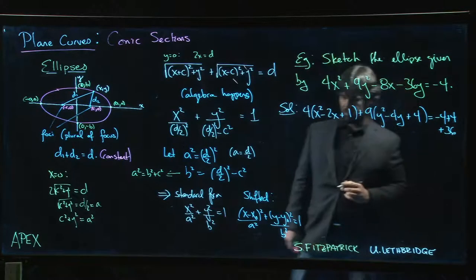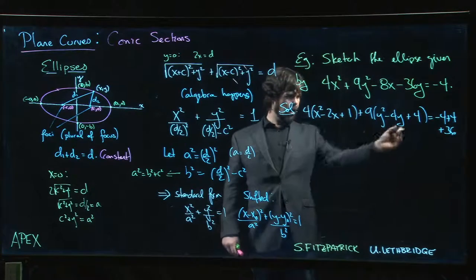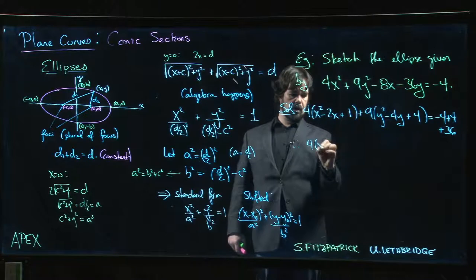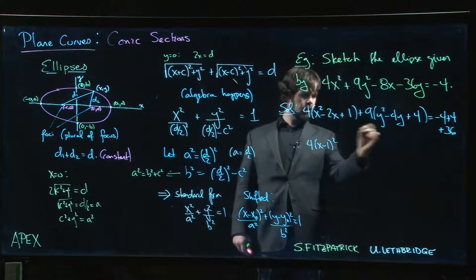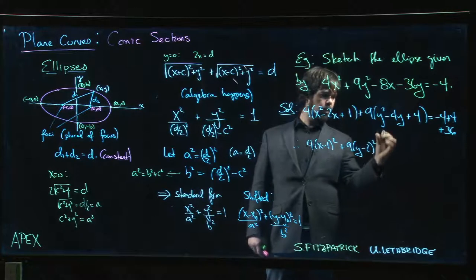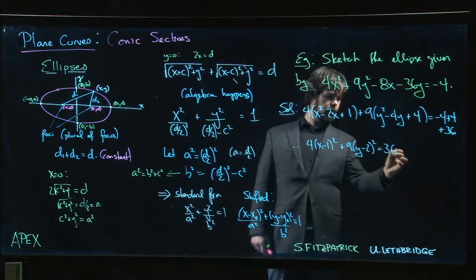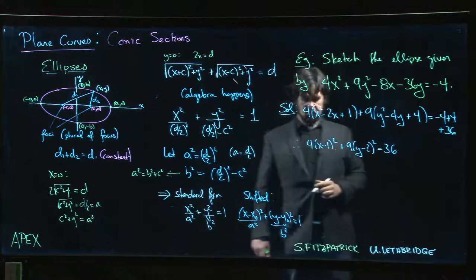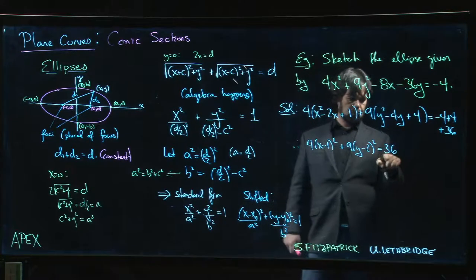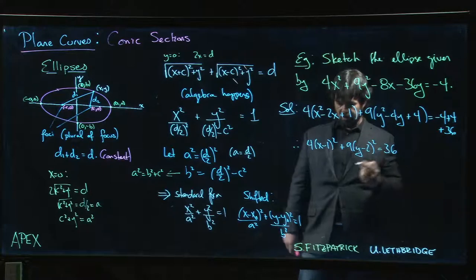Okay, all right, so that gives us 4 times (x minus 1) squared, 9 times (y minus 2) squared is equal to 36. To get it into the standard form, all we got to do is divide by 36, and of course 36 is 9 times 4, right? Things were set up to work out nicely for us here.